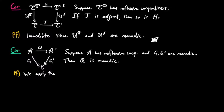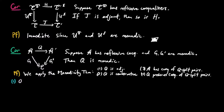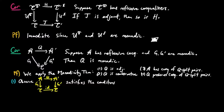To prove this, we use the monadicity theorem. For one, observe that the above triangle satisfies the conditions in the adjoint lifting theorem. Therefore, Q is an adjoint functor.